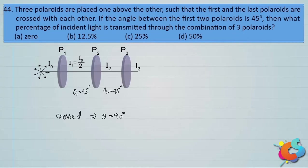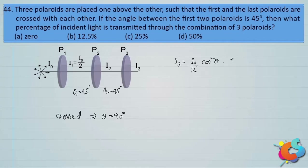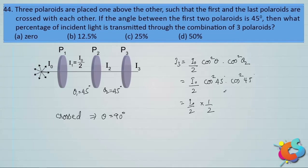Using Malus's law: I₃ = (I₀/2) · cos²θ₁ · cos²θ₂ = (I₀/2) · cos²45° · cos²45°. Since cos 45° = 1/√2, cos²45° = 1/2. So I₃ = (I₀/2) · (1/2) · (1/2) = I₀/8.